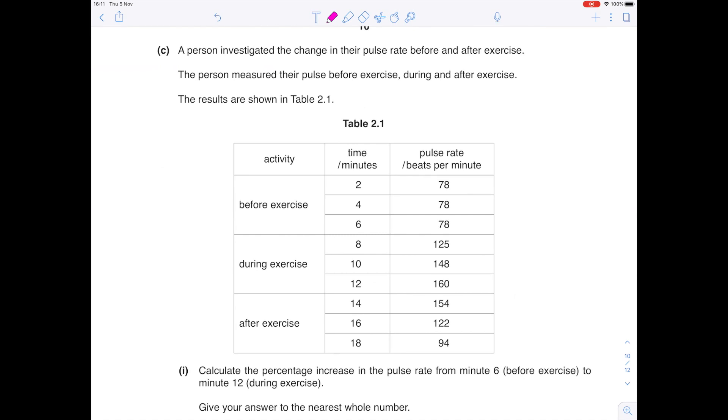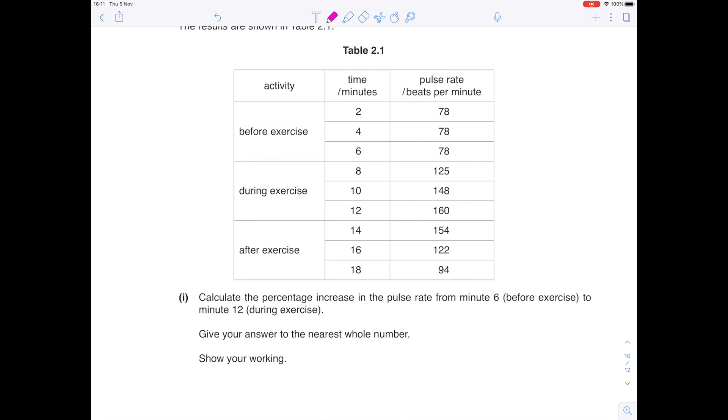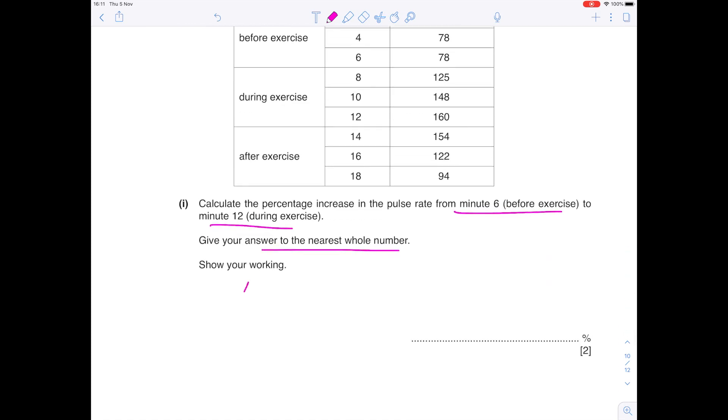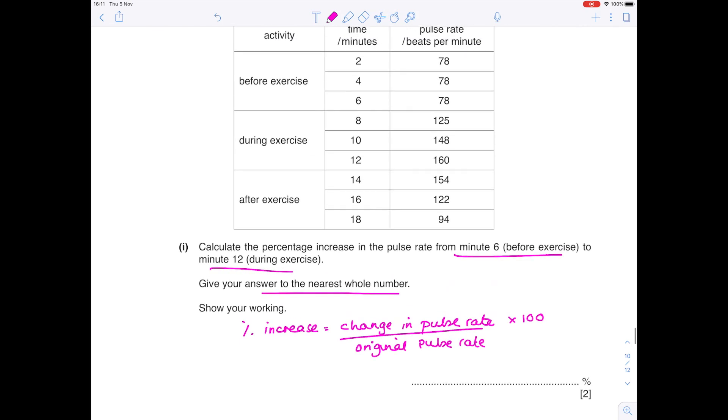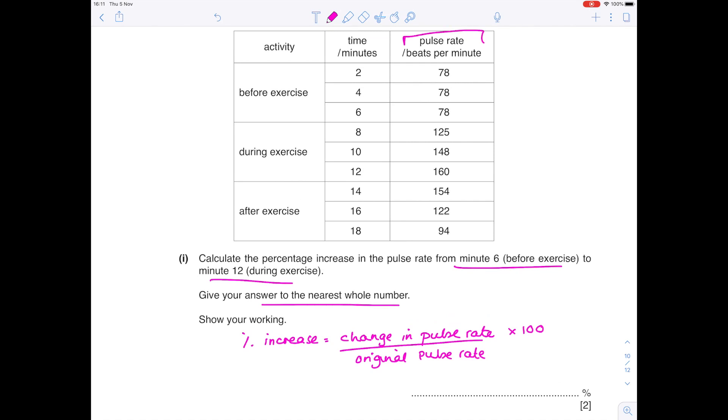A person investigated the change in their pulse rate before and after exercise. The person measured their pulse before exercise during and after exercise. The results are shown in Table 2.1. Calculate the percentage increase in the pulse rate from minute 6 before exercise to minute 12 during exercise. Give your answer to the nearest whole number. Okay, so we're looking for percentage increase, which is really the same as percentage change. So you're looking at change in pulse rate divided by original pulse rate multiplied by 100 because it's a percent. So make sure you pull out the right numbers here. So we're looking at pulse rate. So this column from minute 6, which is 78 beats per minute, all the way up to 160 because we're looking at these key numbers after 6 minutes and 12 minutes. So work out your change in pulse rate by doing 160 minus 78. Divide it by that original pulse rate which we know is 78 multiplied by 100 and your final answer here is 105%.